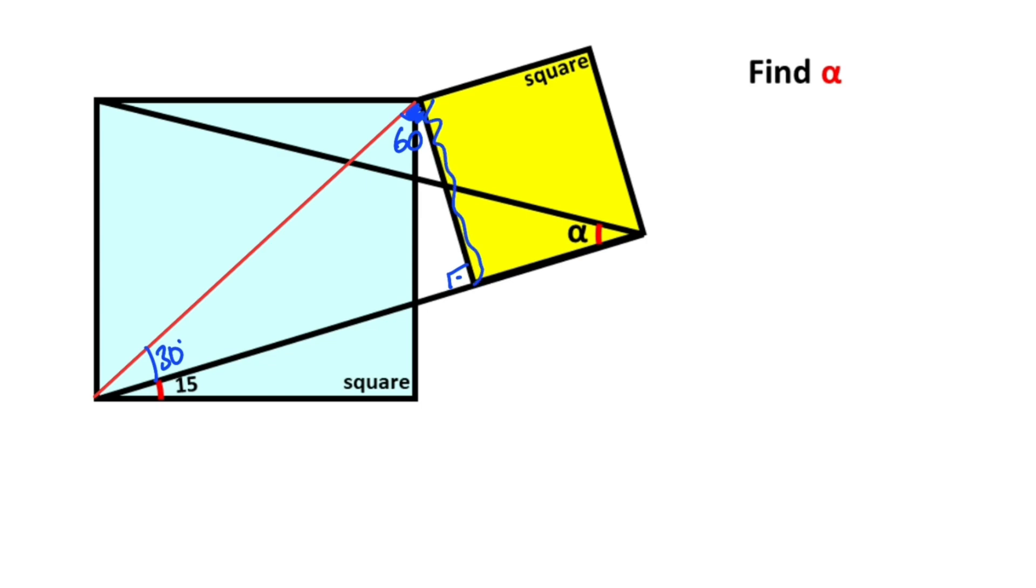Then, this side I want to represent with X. If there's an X unit opposite of the 30 degrees, opposite of the 90 degrees must be equal to 2X.